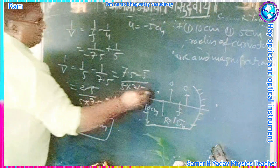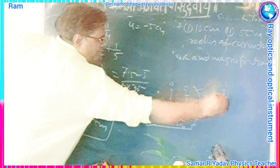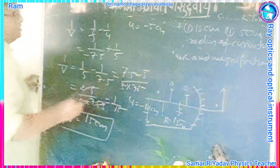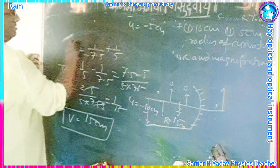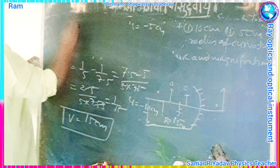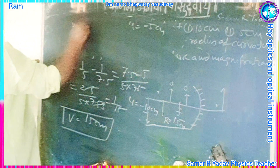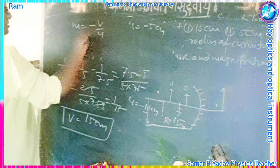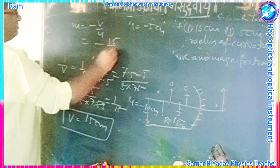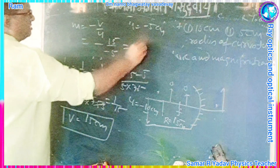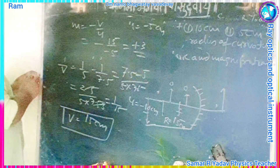The positive sign indicates that the image is formed behind the mirror, and it is erect and virtual. Now the magnification: M is equal to minus V upon U, equal to minus 15 upon minus 5, equal to plus 3. So the image is erect, big in size, and virtual.